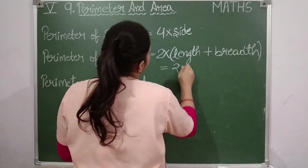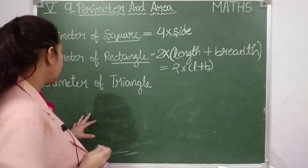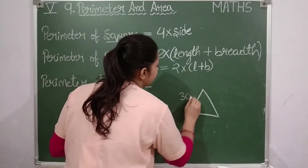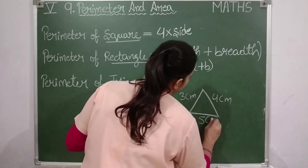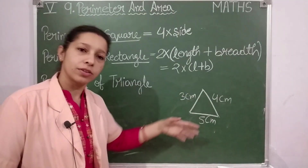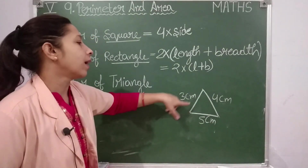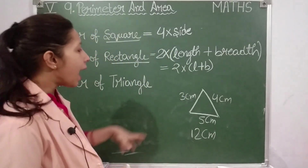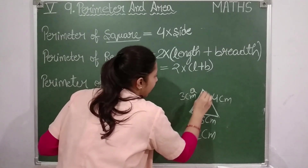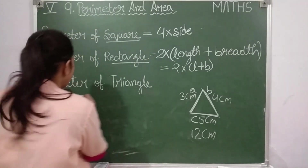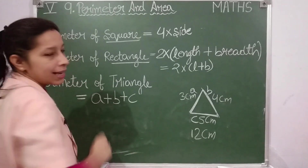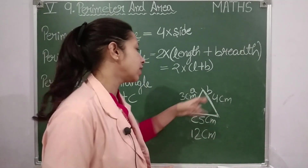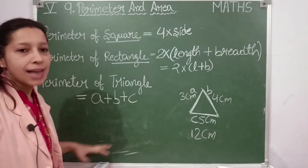Now, perimeter of a triangle. Suppose this triangle has sides of three centimeters, four centimeters, and five centimeters. To calculate its perimeter, add all three sides: three plus four plus five equals twelve centimeters. Naming the sides a, b, and c, the formula for the perimeter of a triangle is a plus b plus c. This is a scalene triangle, where all three sides are of different measurements, so we add all three sides.